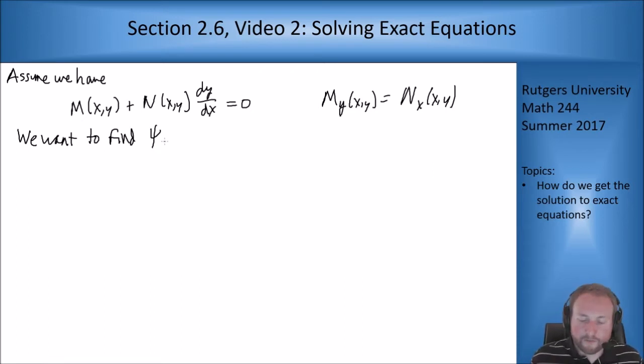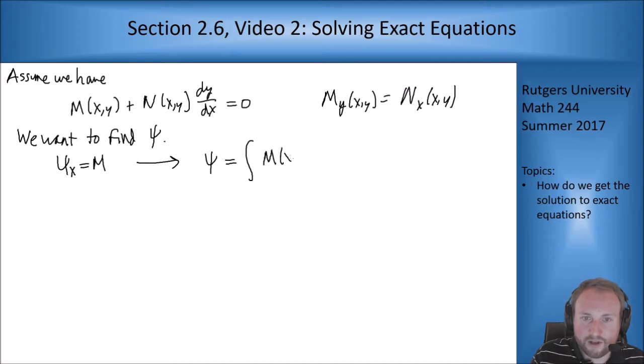So we want to find this function ψ. So we know we want that ψ_x = M. This is the condition we want to have satisfied by our function. So let's just take M, integrate in x and set that to be ψ. So ψ is going to be the integral of M(x,y)dx. It's just an anti-derivative.